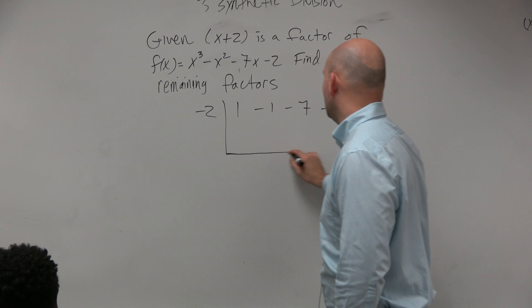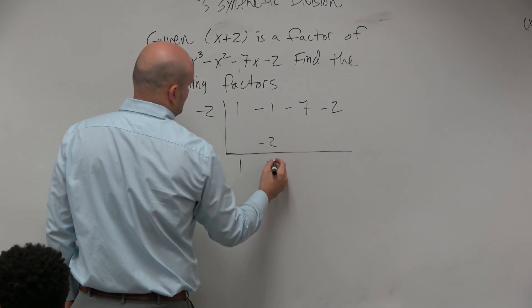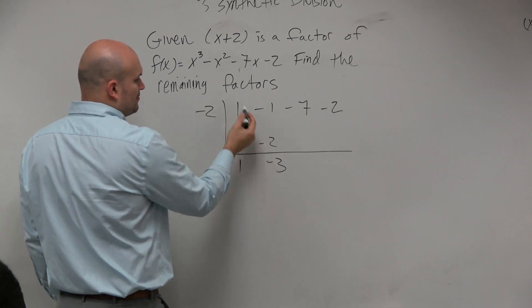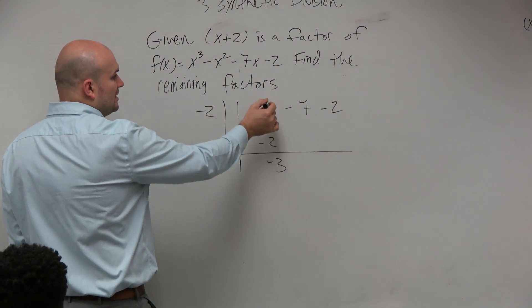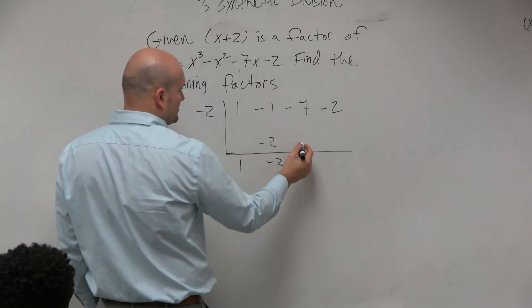You guys OK if I go a little bit faster with the synthetic division? It looks like everybody almost got it. Bring down the 1. 1 times negative 2 is negative 2. Add on the verticals, negative 1 plus negative 2 is negative 3. Negative 3 times negative 2 is going to be a positive 6.